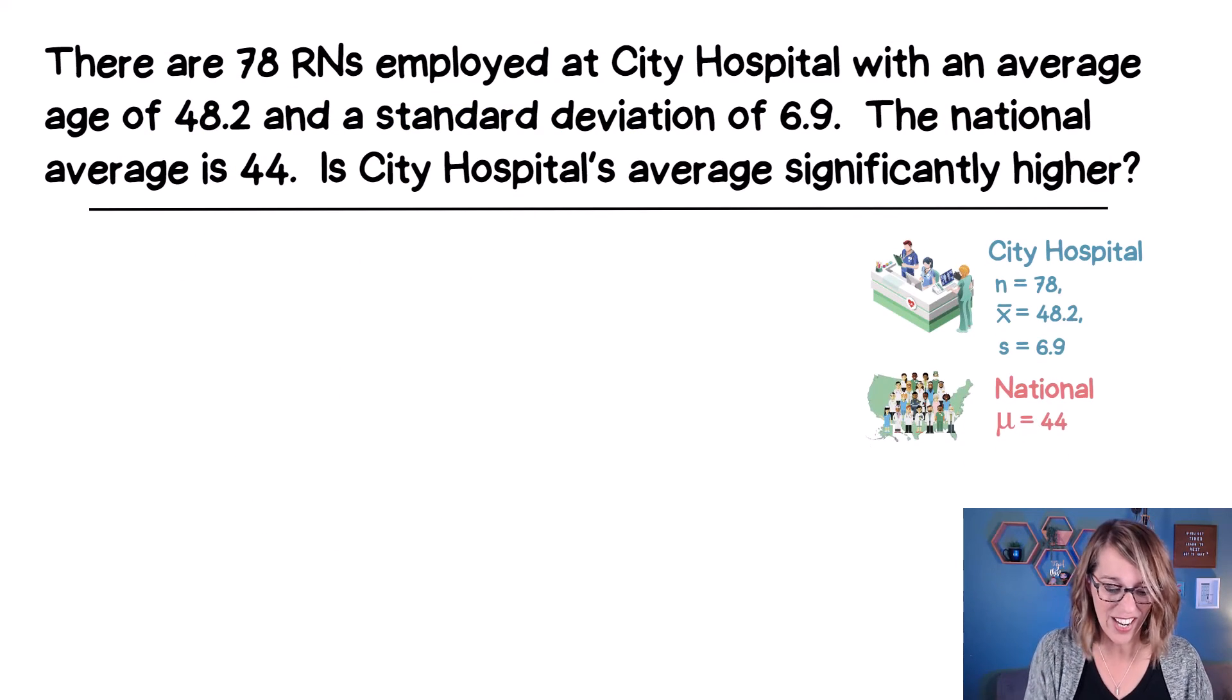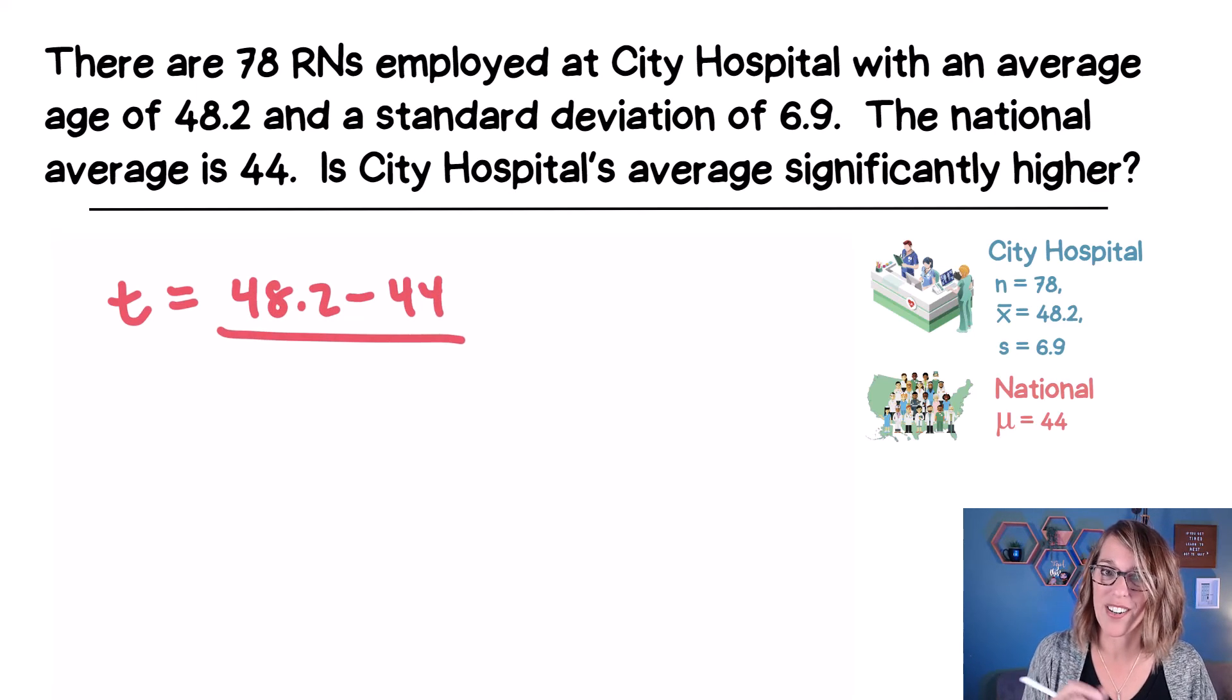Let's go ahead and do this calculation as well. So T is equal to X bar, which is 48.2, minus our mean, which is 44, divided by now our sample standard deviation, which is 6.9, all divided by the square root of 78.